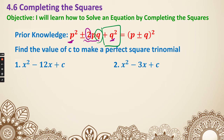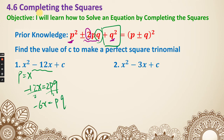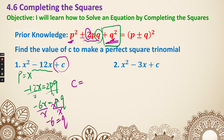So now let's have a look at an example. The x squared is given, which corresponds to p squared, so we can write p equals x. This negative 12x is 2pq, and we're trying to find q. So we divide by 2, giving us negative 6x equals pq. Since p is just x, we get negative 6 equals q. We want the constant c, which corresponds to q squared, so c equals negative 6 squared, which is 36.